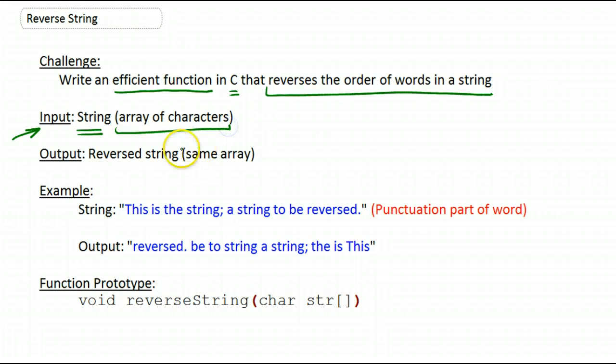This is the input to your function, and your function will have to output the reverse of that string, storing it in the same array. You will take that string and reverse the words within it, storing the result in the same array.